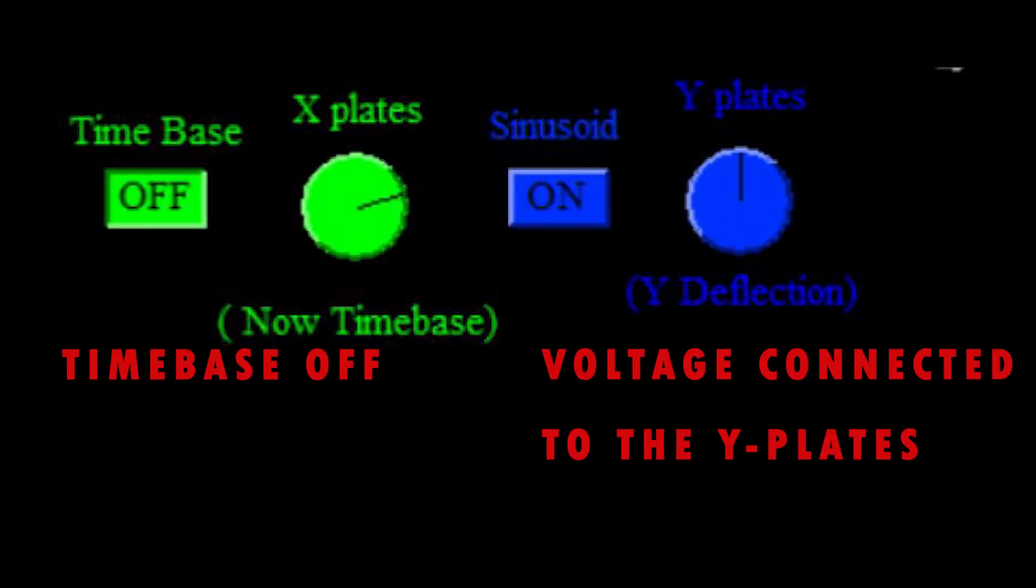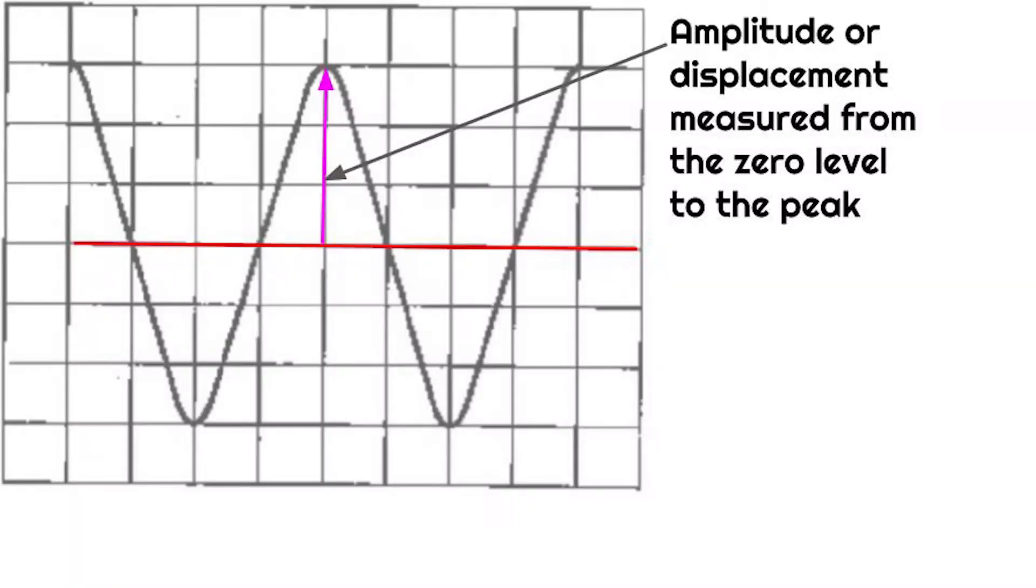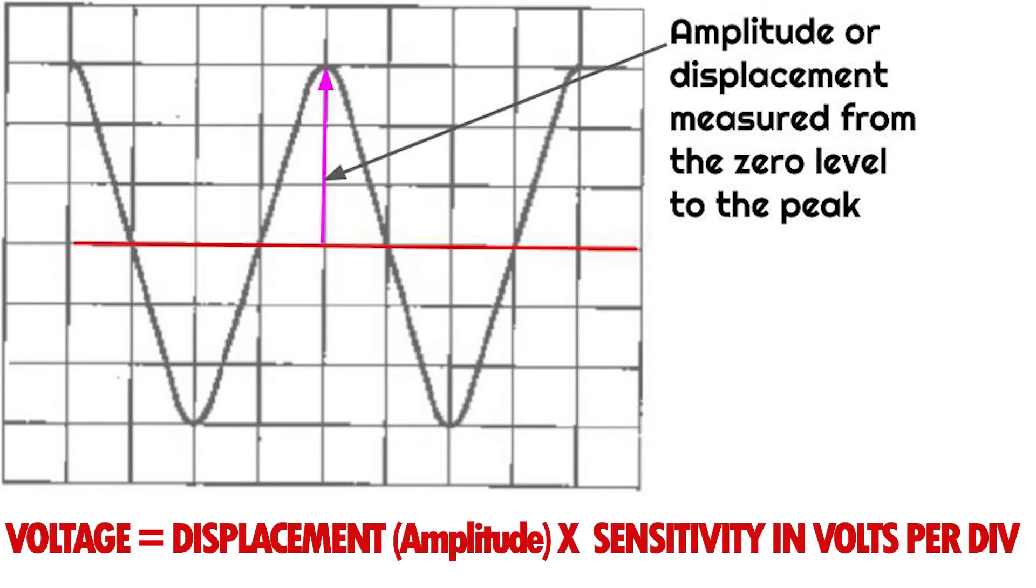To use the cathode ray oscilloscope as a voltmeter, the time base circuit is switched off and the voltage to be measured is connected to the Y plates. The vertical displacement or the amplitude is measured and the voltage is determined using the formula voltage is equal to displacement or amplitude times sensitivity of the Y gain, which is normally given in volts per division.